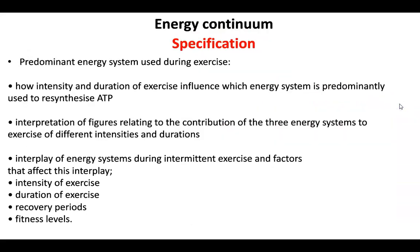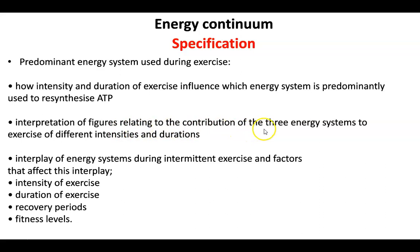Looking at the specification, you need to know the predominant energy system used during exercise, and how intensity and duration influence which system is predominantly used to resynthesize ATP. You also need to be able to interpret figures relating to the contribution of the three energy systems, and understand the interplay of energy systems during intermittent exercise — including the factors that affect this interplay: intensity, duration, recovery periods, and fitness levels.